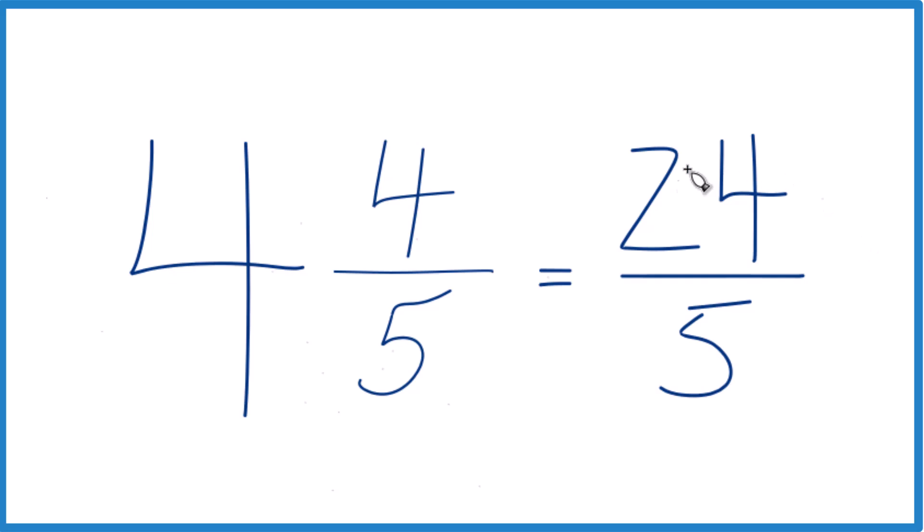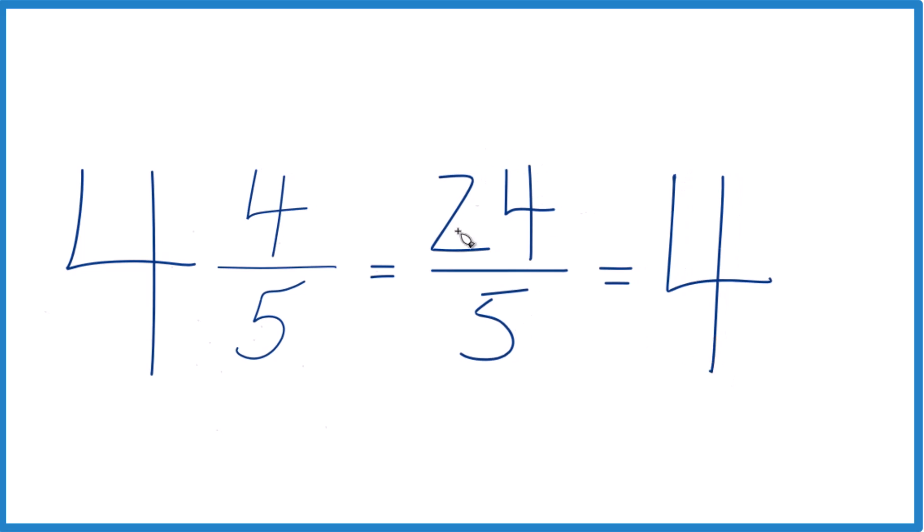You can even check your work here, because 5 goes into 24. Let's see, 4 times 5 would be 20, and then we'd have 4 left over here. Bring the 5 across, we get 4 and 4 fifths.